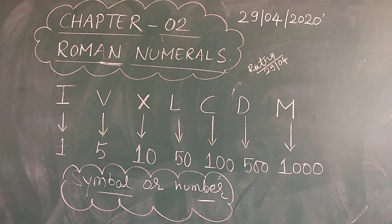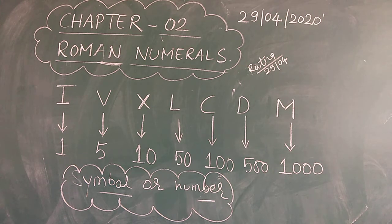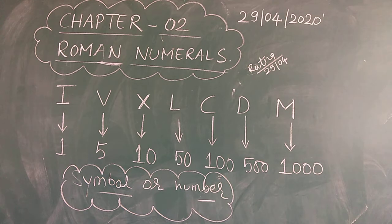As we have the Hindu-Arabic numeral system — our number system which we have adopted — like 1, 2, 3, 4, 5, 6, 7, 8, 9, 10. This is known as the Hindu-Arabic numeral system.